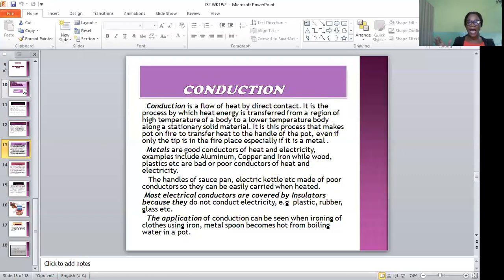What are metals? Metals are good conductors of heat and electricity. Examples include aluminum, copper and iron. While wood, plastic, etc. are bad or poor conductors of heat and electricity. The handles of our saucepan, electric kettle, pots and so on are made of poor conductors so they can be easily carried when heated. Also, most of our electrical conductors are covered by insulators, so they do not conduct electricity. Examples are plastic, rubbers, glass and many more. The application of conduction can be seen when you want to iron your school uniform. The heat from the iron will be transferred to your clothes, that is your school uniform, and make it smooth and it will look elegant on you.